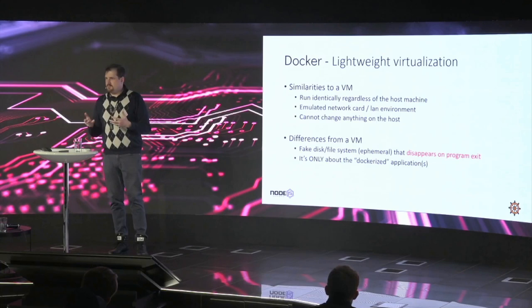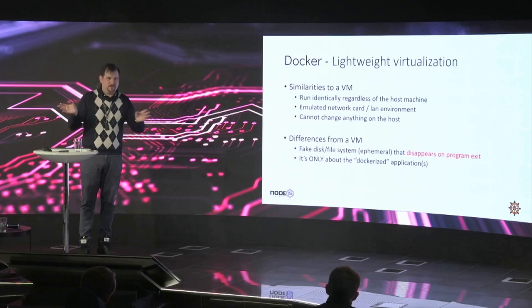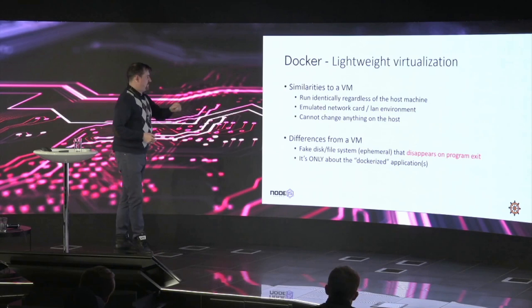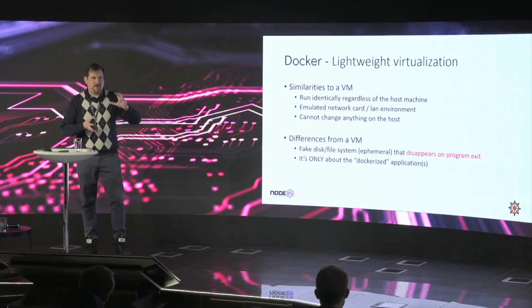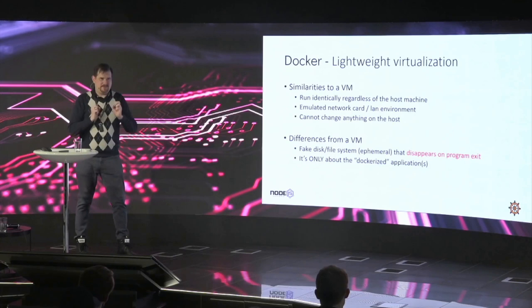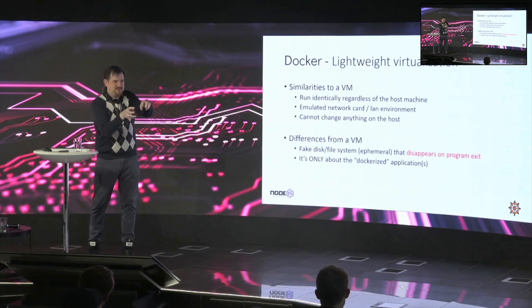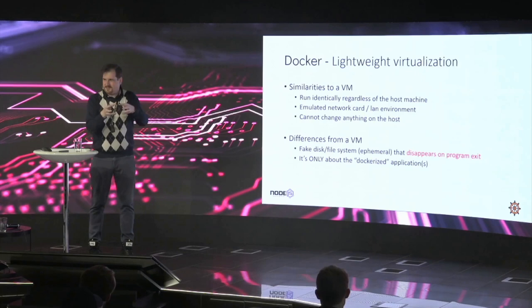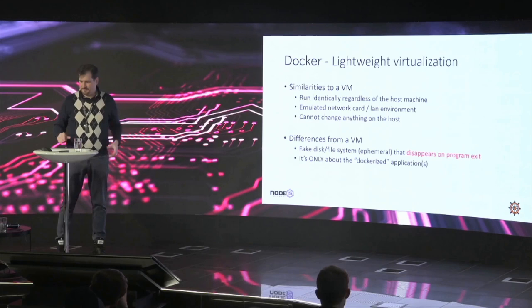Differences from a virtual machine: the file system attached to Docker is a completely faked file system that is just there while the program is running. A Dockerized application is not a full virtual machine — it's just a complete fake around your program. Your program is built and tucked in, thinking it's kind of an operating system from its perspective, but it's only the application running inside this thing. The file system is completely faked and the network is limited to what you want.